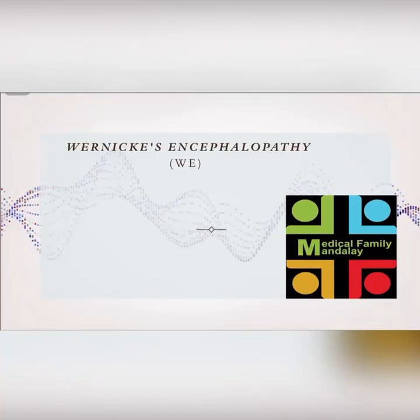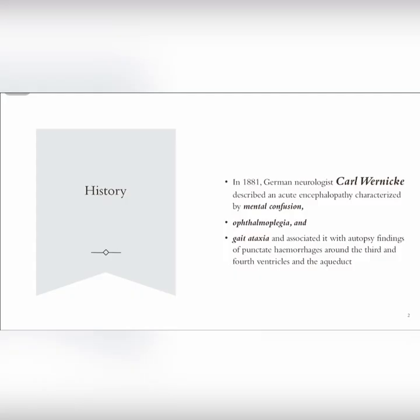Hello everyone, welcome back to the micro learning program of MFM. Today I'd like to talk about Wernicke encephalopathy. It was described as an acute encephalopathy by German neurologist Carl Wernicke in 1881. It is characterized by three facts: mental confusion, ophthalmoplegia, and gait ataxia, as well as obtrusive findings of petechial hemorrhages around the third and fourth ventricles and the aqueduct.